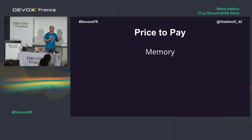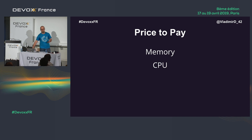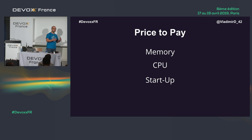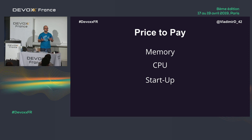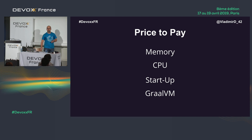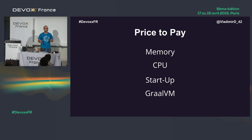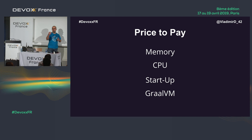Spring does a lot of reflection and similar things at runtime, so we pay a price in memory, CPU, and startup time. When you start a Spring application, it scans your code, does injections and reflections, which slows startup down. Another price is GraalVM — as far as I know, Spring currently has problems working with GraalVM out of the box, though Oracle and the Spring team are working hard on it.